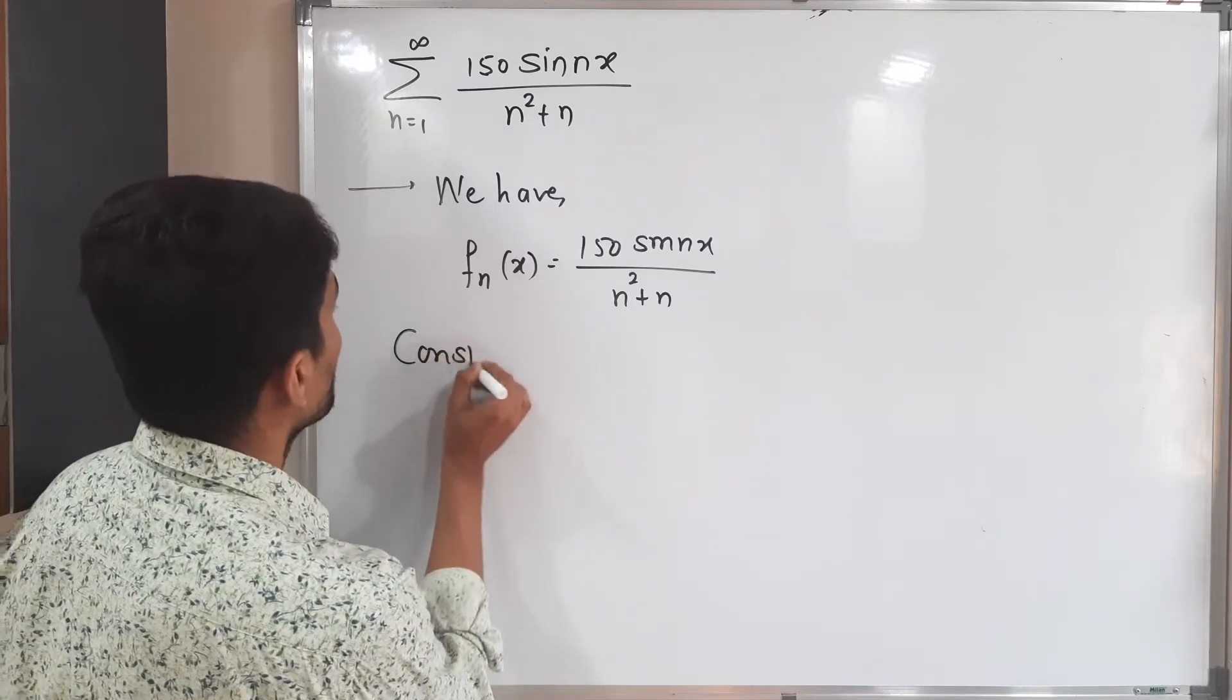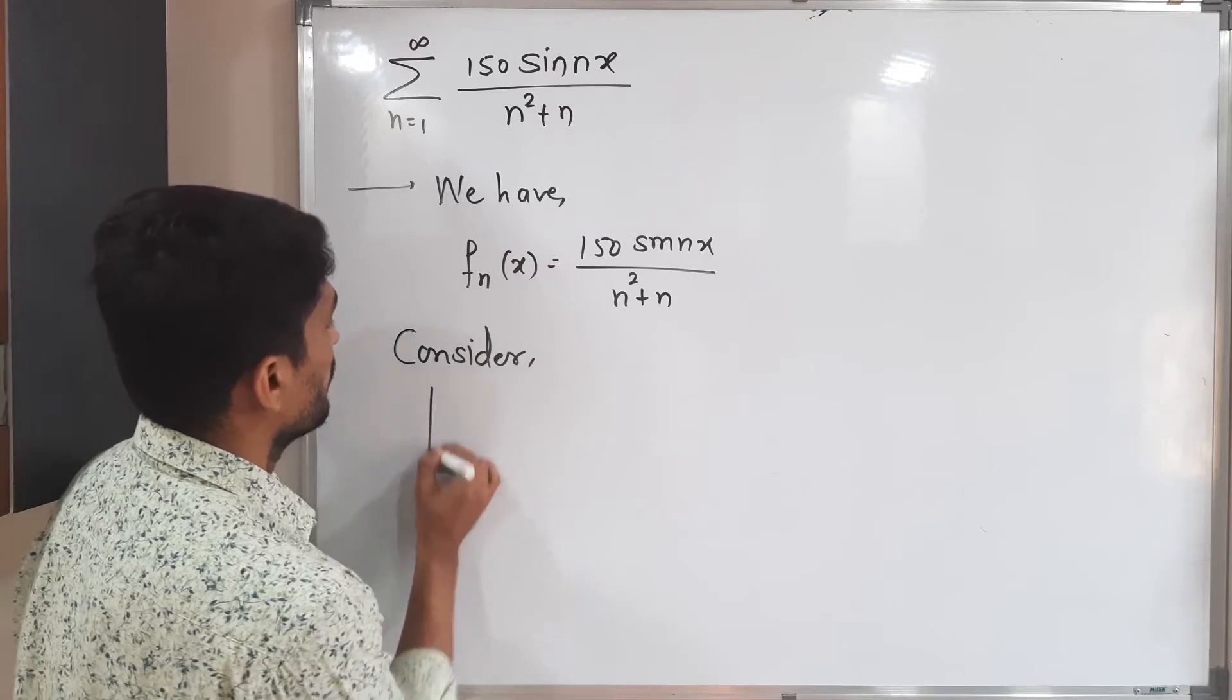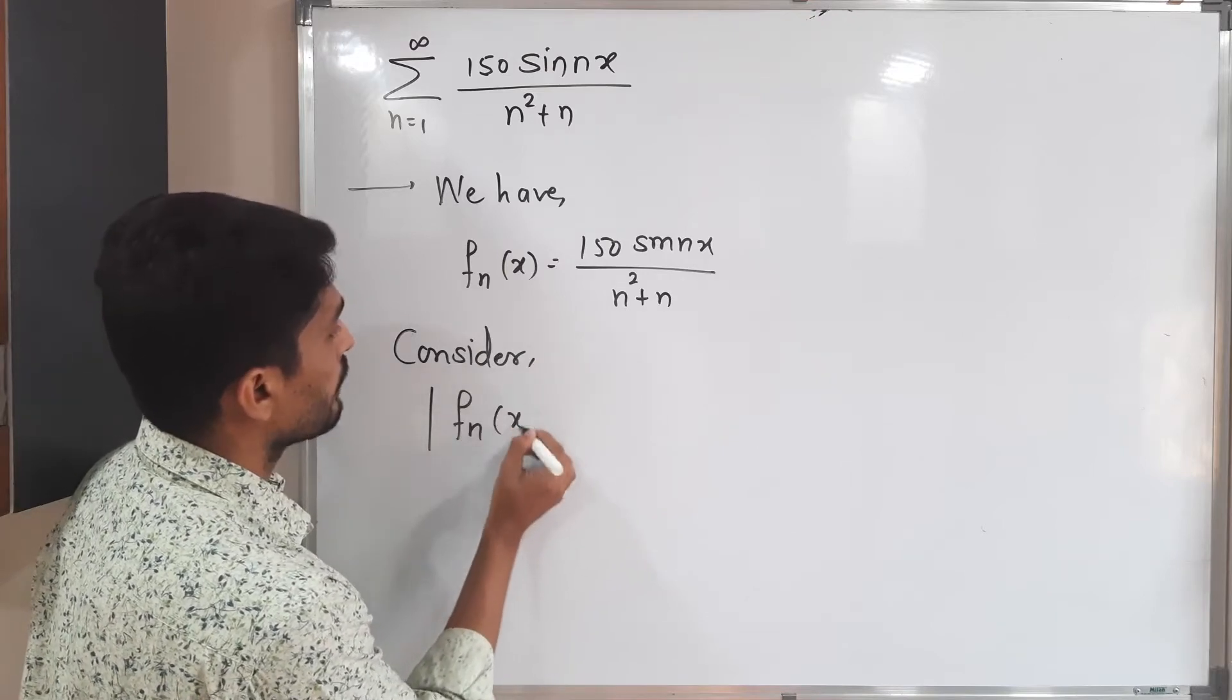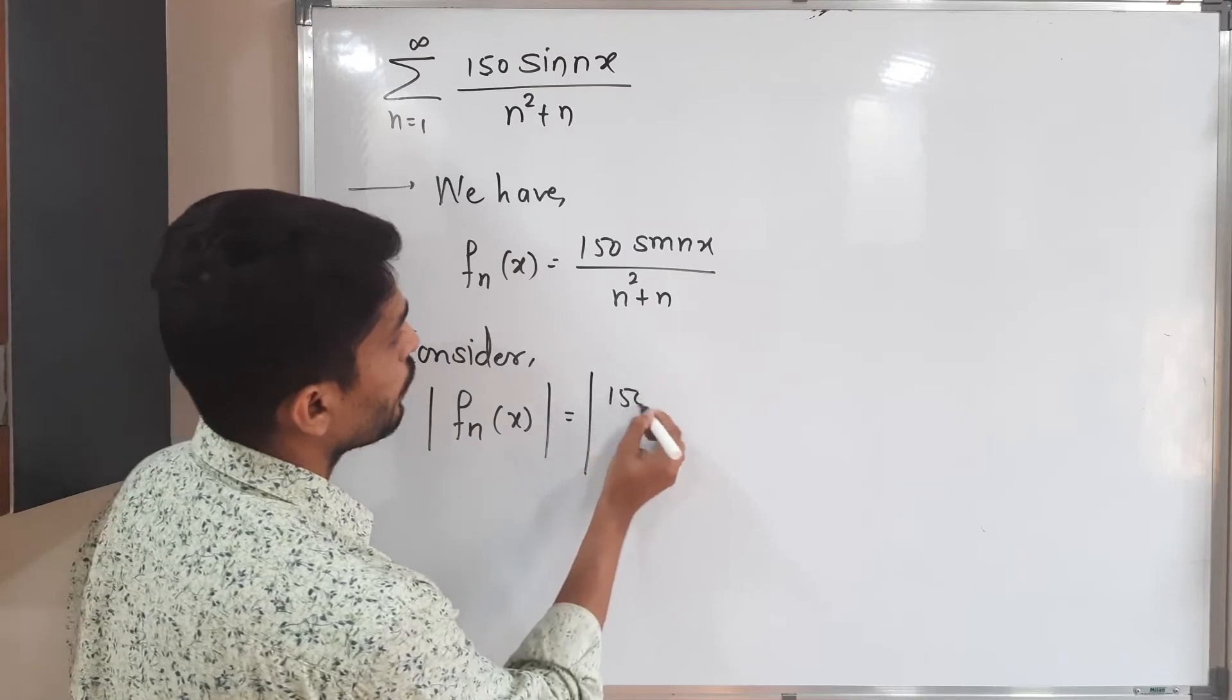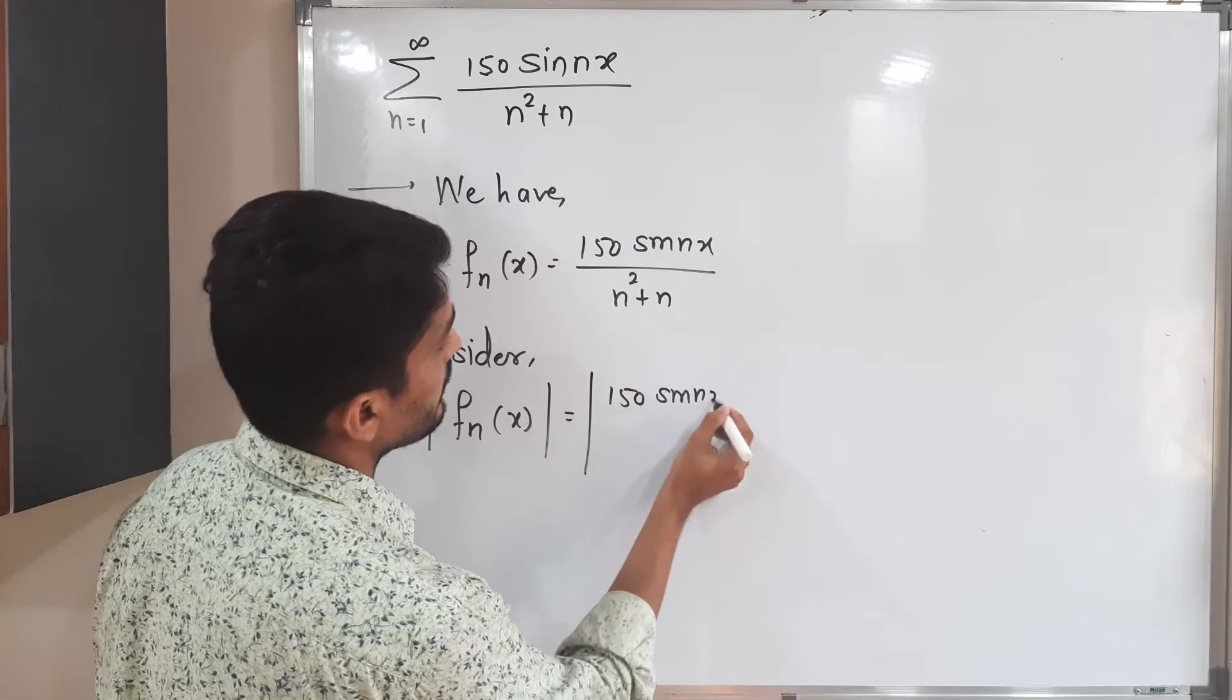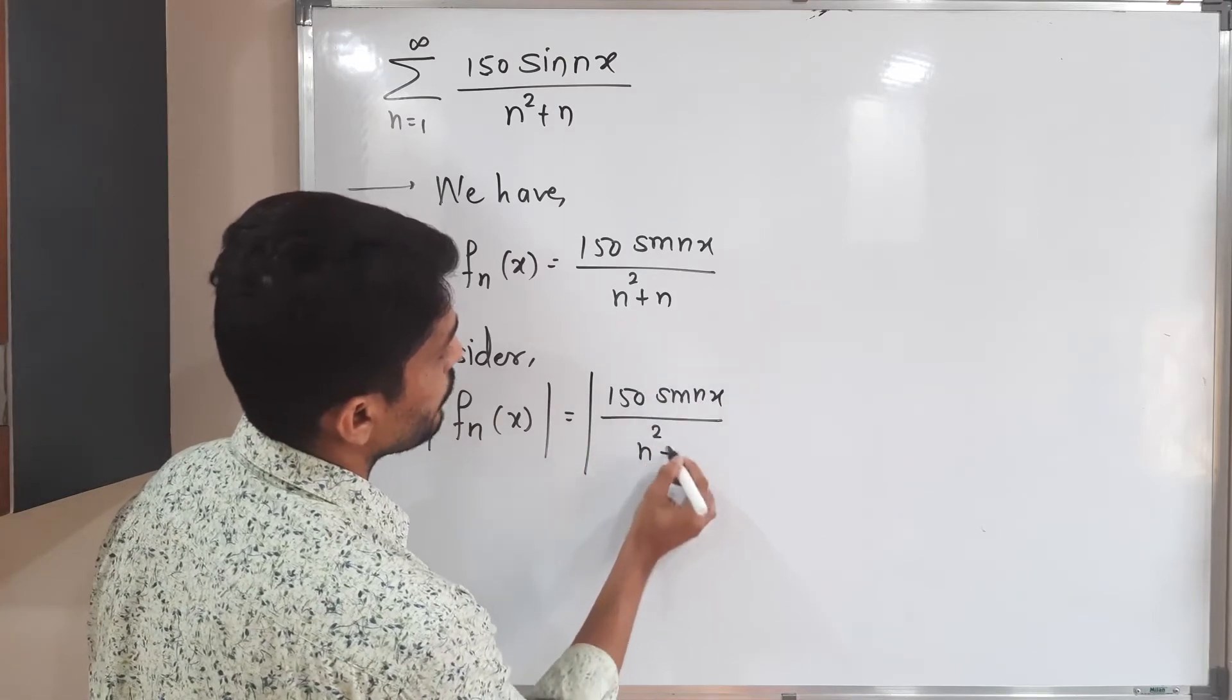So consider mod f_n of x. What is the value of f_n of x? This one, let us put it here: 150 sine nx upon n square plus n.